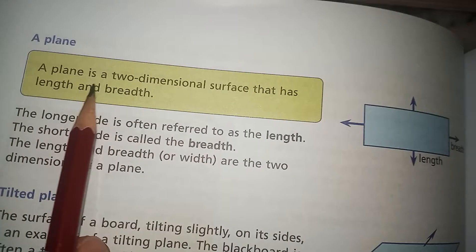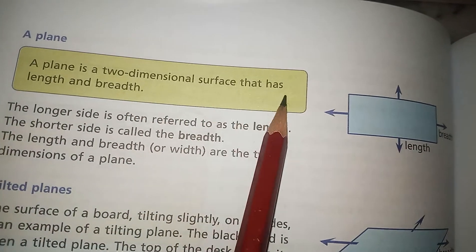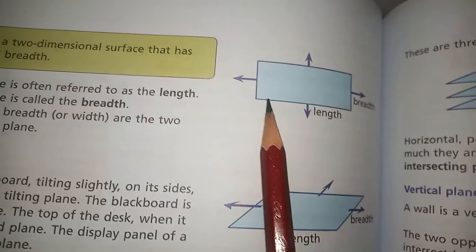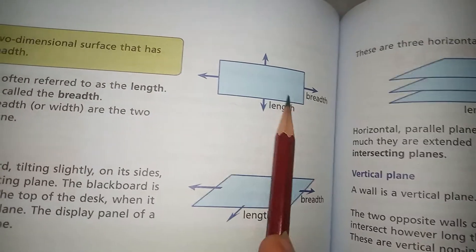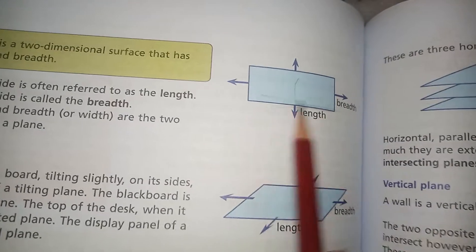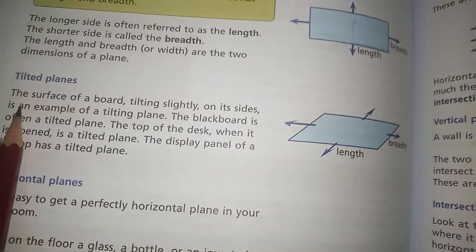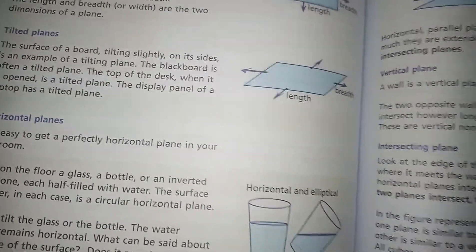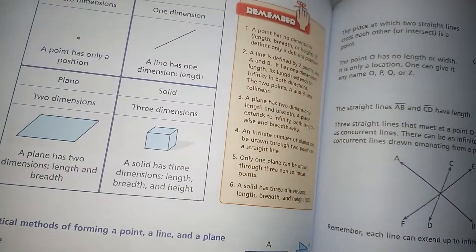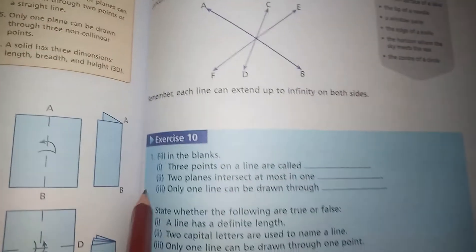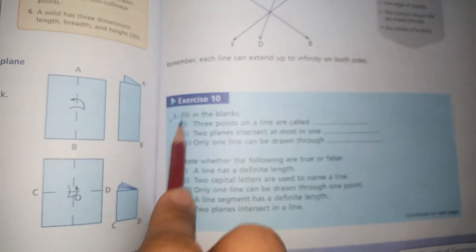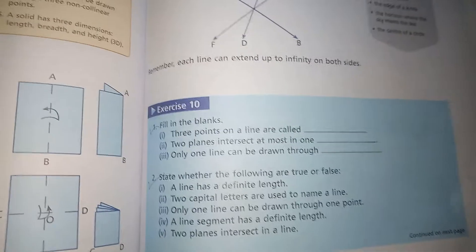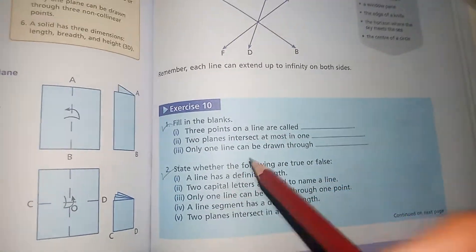A plane is a two-dimensional surface that has length and breadth. There are also tilted planes and horizontal planes. These are the definitions you need to know. Now come to the exercise — you have to fill in the blanks and give true and false statements after reading the definitions again, as we have covered all these points.